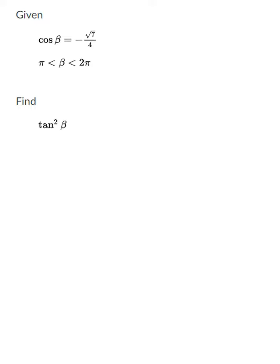All right, in this problem, they've given us some information about beta, and they're asking us to find tangent squared of beta. What I'm going to do here is find the tangent of beta first, and then at the end I'll square it and I'll know the tangent squared of beta.